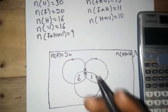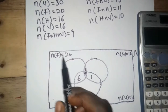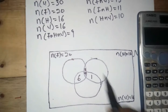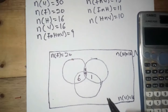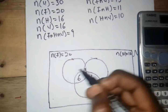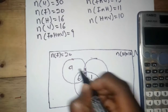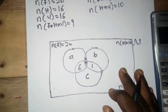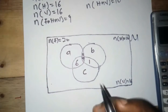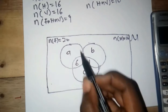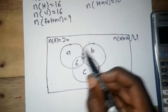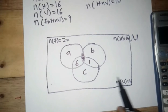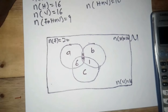We don't yet know the number of students who play football only, hockey only, or volleyball only. Let's represent them with variables: a for football only, b for hockey only, and c for volleyball only. When we sum the whole football circle it should equal 20, the hockey circle should equal 16, and the volleyball circle should equal 16.